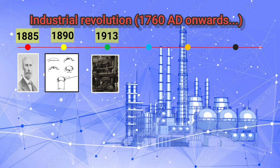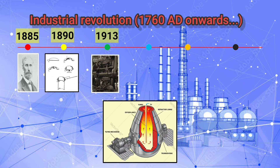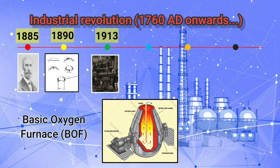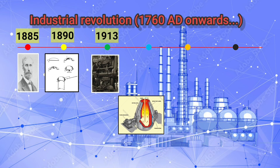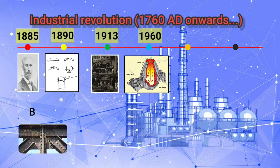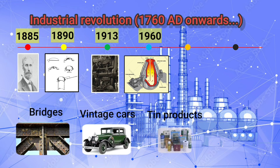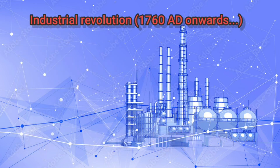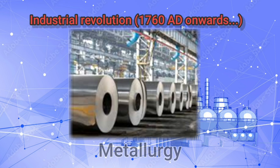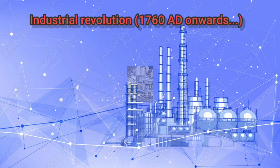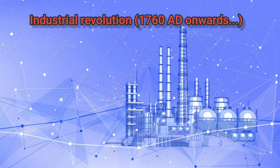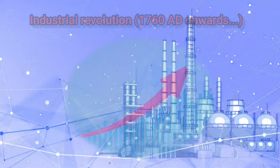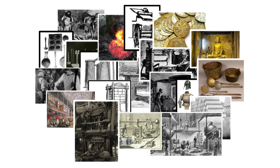The Bessemer process was replaced by the basic oxygen process, resulting in higher production rates, less labor and steel with lower nitrogen content. Sheet metal parts were mainly used in bridges, vintage cars, containers and so on. We have seen the milestones from smelting to the basic oxygen furnace process, and from hammering of metal to the invention of rolling mills and press machines, which helped further growth in the 20th century.